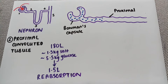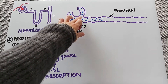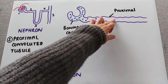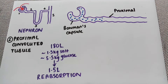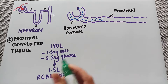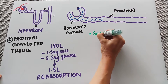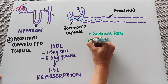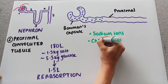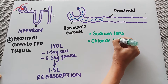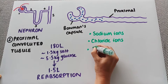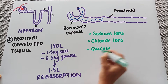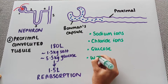Things that have been pushed out into the Bowman's capsule as the glomerular filtrate actually need to be reabsorbed as they're coming down through the proximal convoluted tubule. Some of the key things that need to be brought back into the body are: number one, sodium ions; number two, chloride ions; number three, glucose; and number four, water.